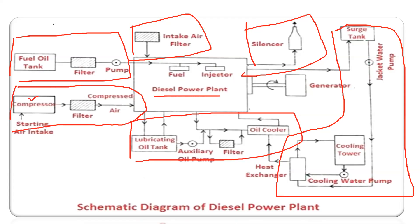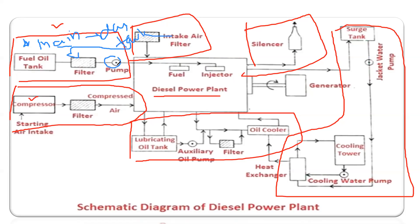First thing is your fuel oil tank. In the fuel oil tank, there are two types of tanks: the first one is the main tank, and the main tank gives oil to the day tank. After the day tank, it passes through the filter, because the filter reduces impurity. When oil passes through the filter, it is directly connected to the pump. The function of the pump is to inject the fuel with high pressure into the diesel engine.